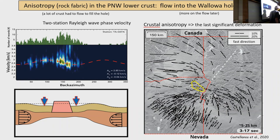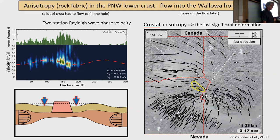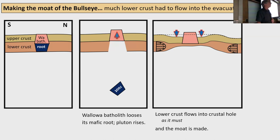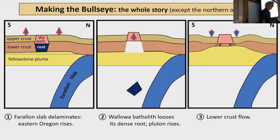Putting the whole story together: we have the root, we uplift the whole area, the root drops off, the Wallowas come up and suck crust in from around them — producing the moat. That accounts for the bullseye: the central uplift (Wallowas), the moat, and the surrounding ring being remnants of the old plateau. The Yellowstone plume beneath helps hold the whole area up.